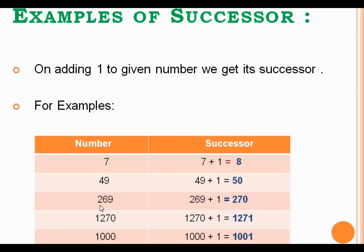Likewise, 269 is the given number. So, we want to find out the successor of 269. We have to just add 1 to 269, so we get 270. 270 will be the successor of 269.